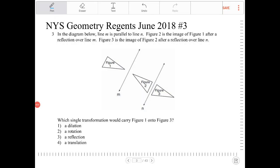In the diagram below, line M is parallel to line N. Figure 2 is the image of Figure 1 after a reflection over line M.